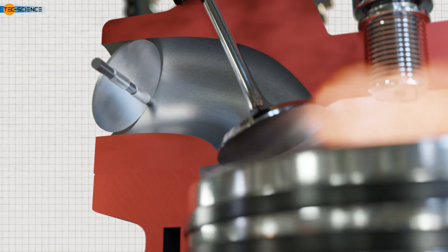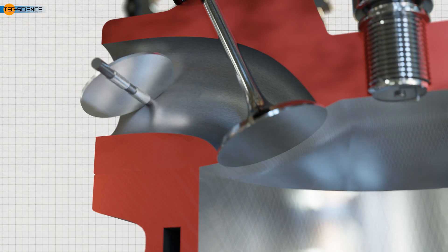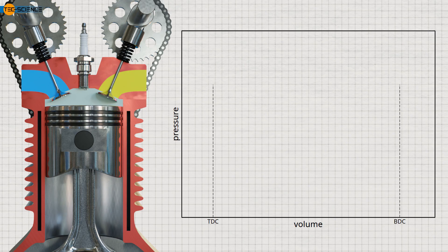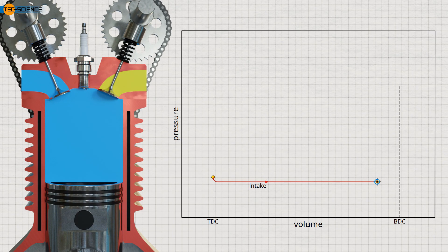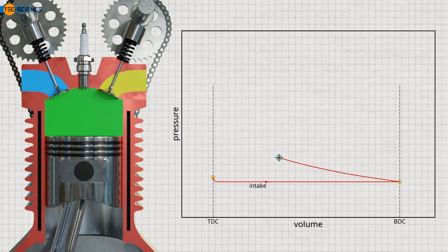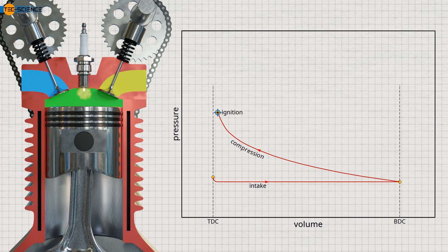Let's discuss the actual thermodynamic processes during the four strokes of an auto engine. These can be clearly illustrated in a pressure-volume diagram. First, the intake process takes place due to the negative pressure. Next, the compression process begins, which requires work to be done and causes the pressure to rise sharply as the volume decreases. This also causes the temperature to rise to several hundred degrees Celsius. Just before reaching the top dead center, the ignition of the fuel-air mixture begins with the help of a spark plug — therefore called spark ignition. The heat produced by the combustion of the gases causes the temperature and pressure to rise dramatically.